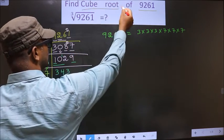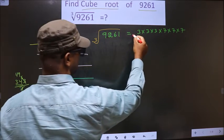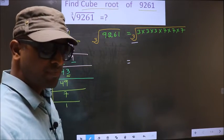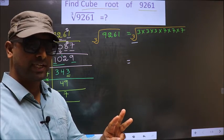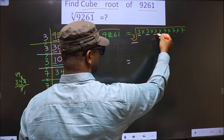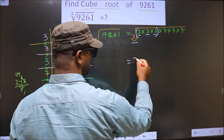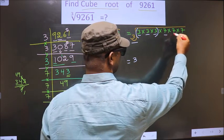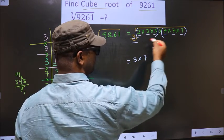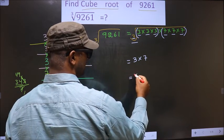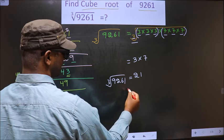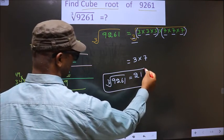Here we have to find the cube root, so we take the cube root on both sides. We have a property for the cube root: a number present 3 times inside the cube root will come out and should be written only once. Here we have the number 3 present 3 times, so it comes out and is written only once. The number 7 is also present 3 times, so it comes out and is written only once. No more numbers are left, so we have 3 times 7, which is 21. The cube root of 9261 is 21. This is our answer.